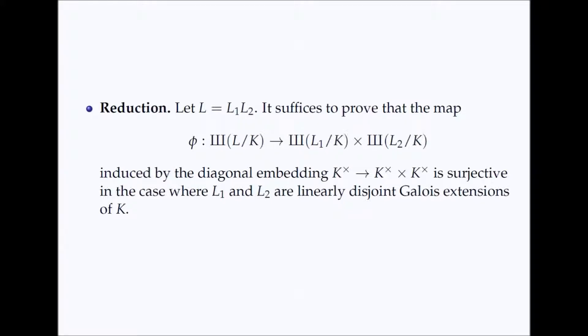Our proof is based on the following reduction, which we obtain using class field theory. We show that it is sufficient to prove that the map phi of Tate-Shafarevich groups is surjective. Furthermore, it suffices to consider this map only in the case where our extensions are Galois, so we can rewrite all these Tate-Shafarevich groups using the isomorphisms mentioned before.